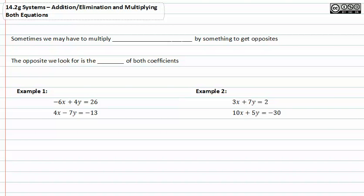Sometimes we have to multiply both equations by something to get opposites. The opposite we look for is the least common multiple or LCM of both coefficients.